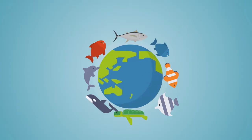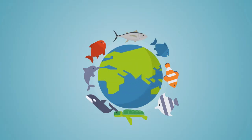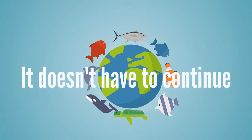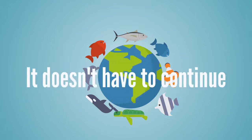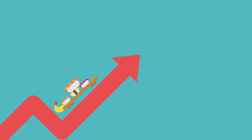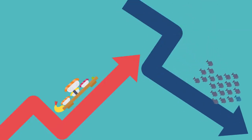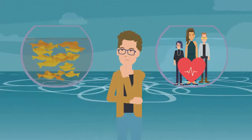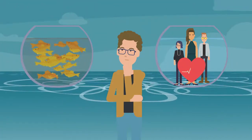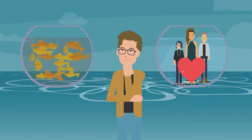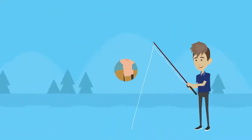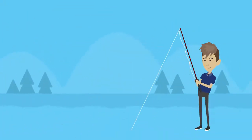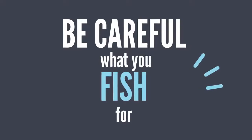Overfishing is a global problem and it's causing many fish populations to decline and harm their ocean ecosystems. But thankfully it doesn't have to continue this way. As the demand for seafood continues to grow, it's important that we significantly reduce overfishing altogether. We have a responsibility to take care of our oceans to guarantee the health and safety of marine life and humans. So be responsible and always be careful what you fish for.